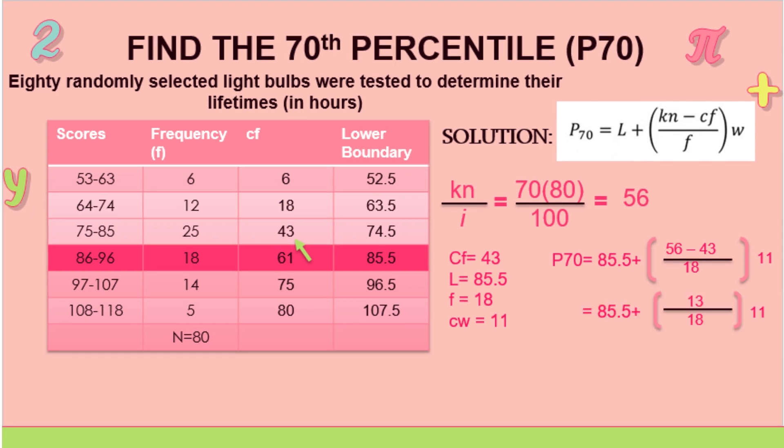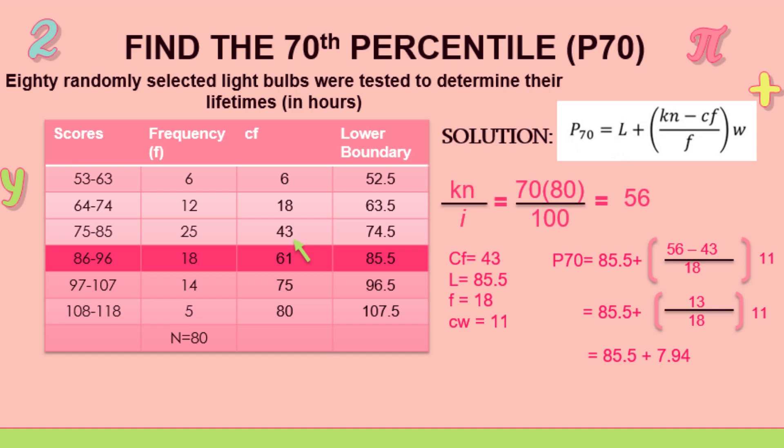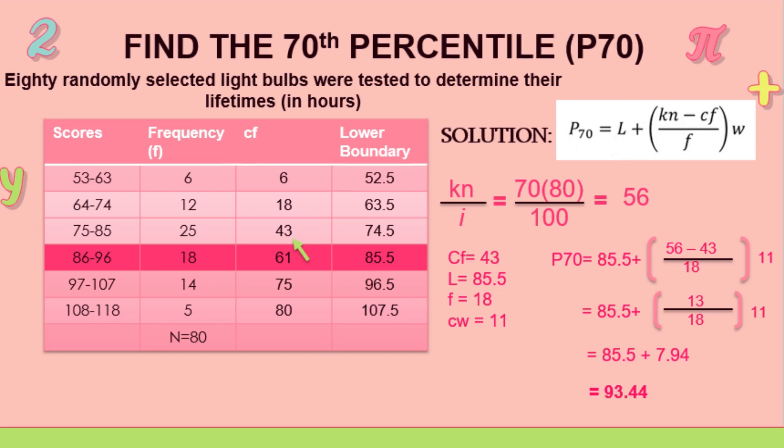We have 13 over 18. 85.5 plus 7.94 is 93.44. So that's the answer for our third example, for the 70th percentile.